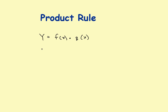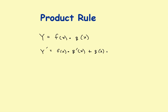Mathematically, what the product rule says is that the derivative is equal to the first function times the derivative of the second function, plus the second function times the derivative of the first function.